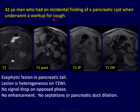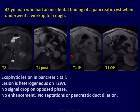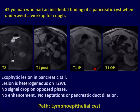Here's another example — an incidental finding of a pancreatic cyst in a patient who underwent workup for cough. This is an exophytic lesion in the tail of the pancreas, slightly bright on T2, no suppression on out of phase, no internal enhancement, no septations, no dilated pancreatic duct. Unfortunately, this was a lymphoepithelial cyst.